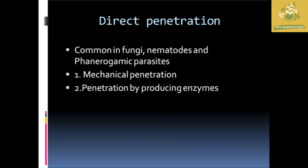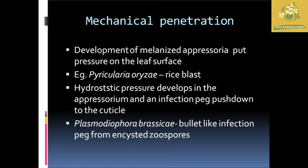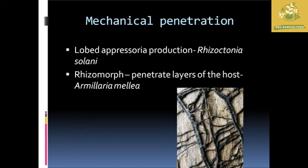Direct penetration is common in fungi, nematodes, and phanerogamic parasites, and is classified as either mechanical penetration or penetration by enzyme production. Mechanical penetration involves development of melanized appresoria that exert pressure on the leaf surface. Example: Pyricularia oryzae (rice blast) develops hydrostatic pressure in the appressorium and pushes an infection peg through the cuticle. Plasmodiophora brassicae uses a bullet-like infection peg from the encysted zoospore. Rhizomorphs and lobed appressoria of Rhizoctonia solani are other examples.